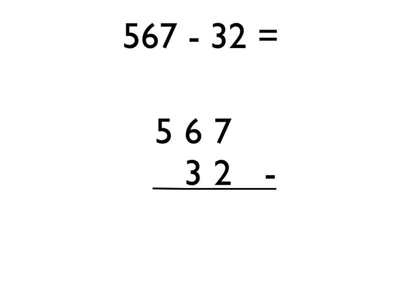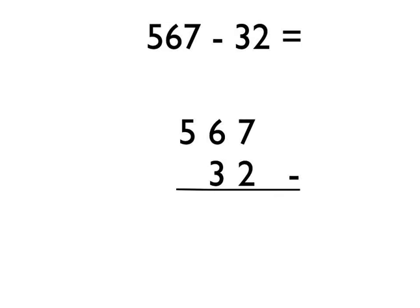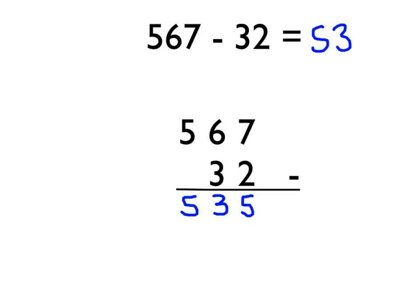Let's look at another example. Again making sure that the units digits are lined up — the seven and the two — making sure that the tens digits are lined up — the six and the three — and then the hundreds digits go in the next column. Starting on the right hand side: seven take away two is five, six take away three is three, and five take away nothing is five. So the answer is five hundred and thirty-five.